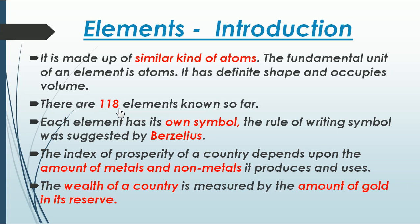Elements can be divided into three types — metals, non-metals, and metalloids — based on their properties. In fact, the prosperity of a country depends upon the amount of metal and non-metal it produces and uses. Many developed countries gain their prosperity from the amount of metal and non-metal they use.